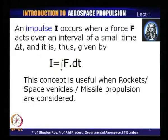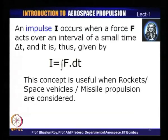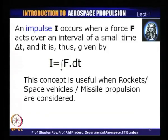Impulse is a corollary of the force we are talking about. The impulse I is defined as a force acting over a very small interval of time: I = ∫F dt. This concept is normally used to define the impulsive force often used to describe the force that makes rockets, space vehicles, and missiles move through air or space. We shall come back to this concept of impulse when we deal with rockets or space vehicles later on in this course.